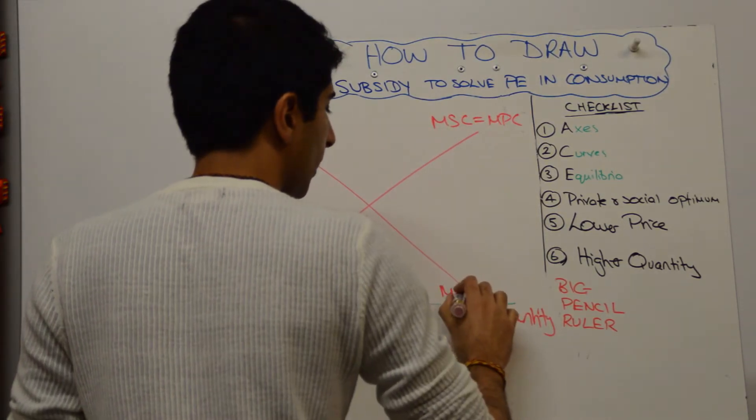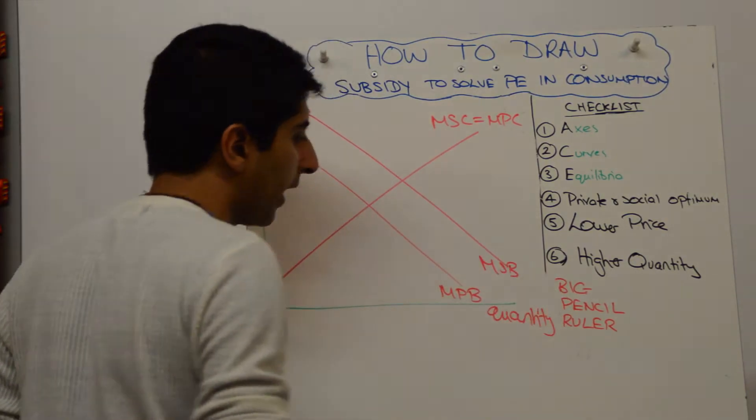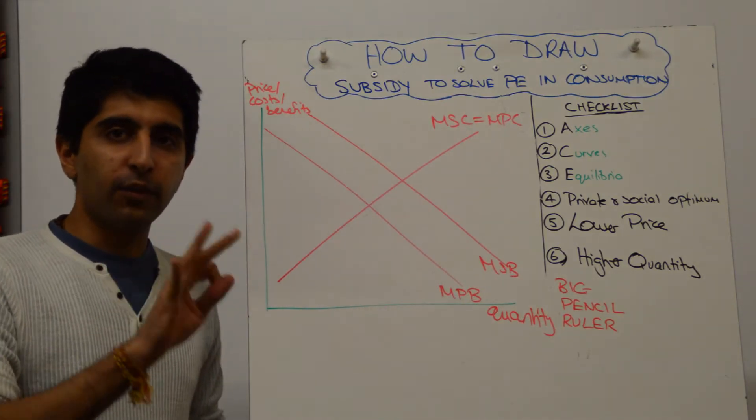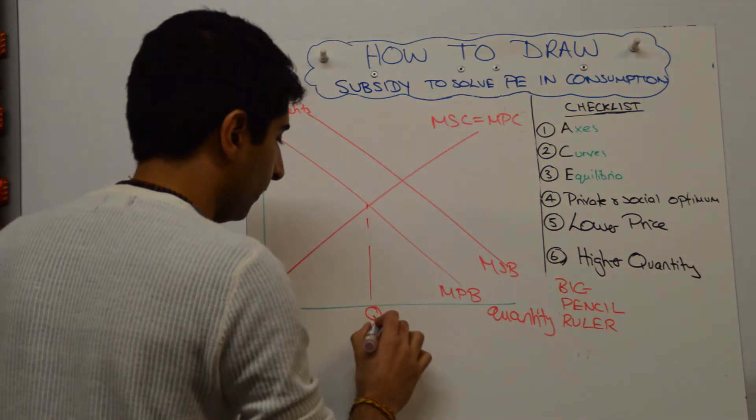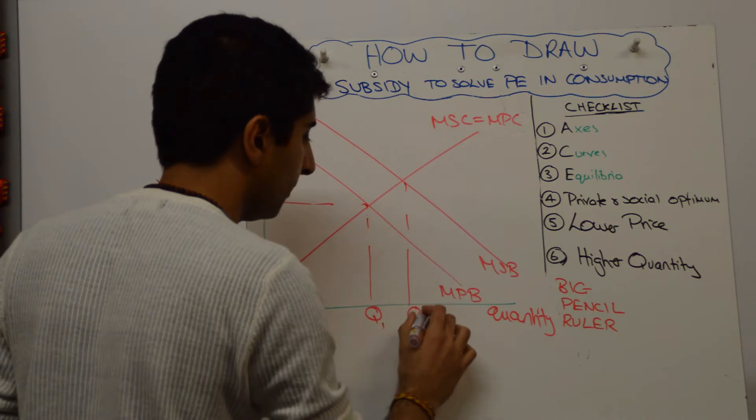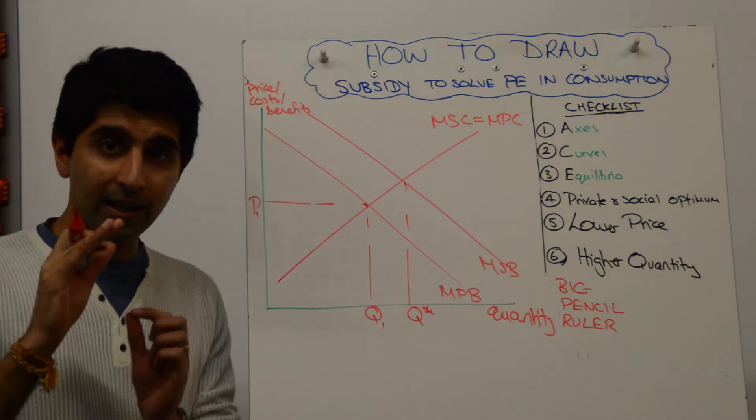The issue is with our benefits curve, where the marginal social benefit is to the right of the marginal private benefit. Now just label three things on the x-axis: quantity, price, and the socially optimum quantity. Label those three things on the axis and stop there.